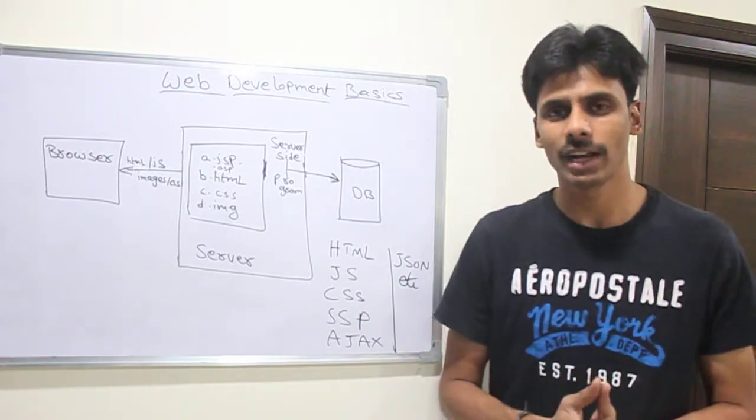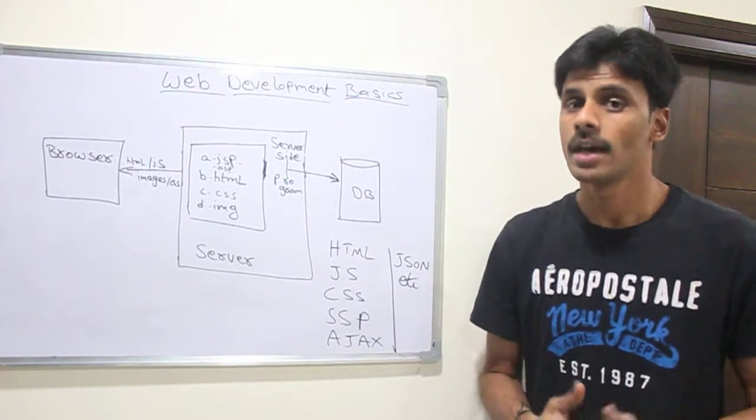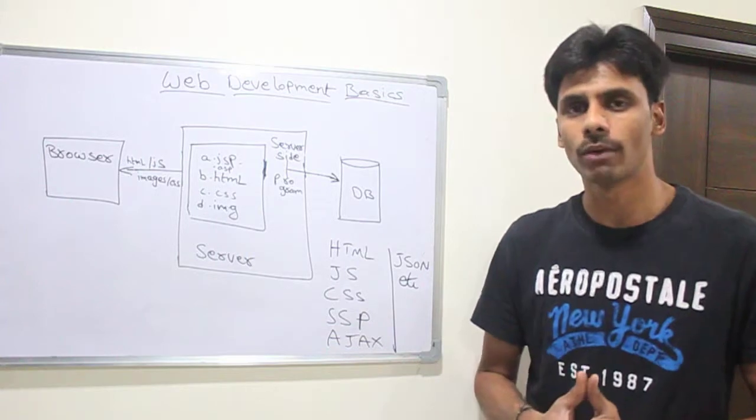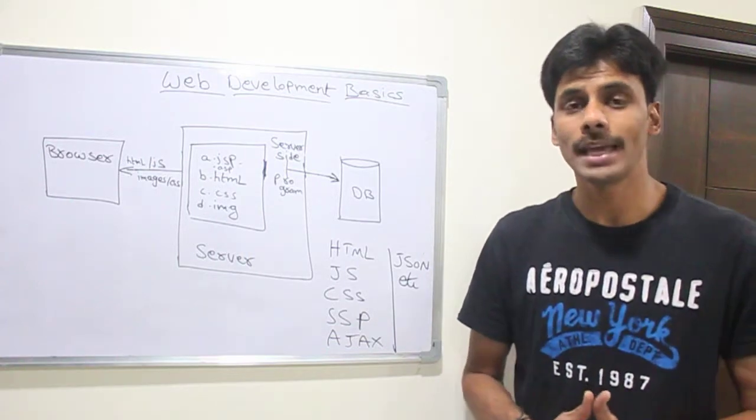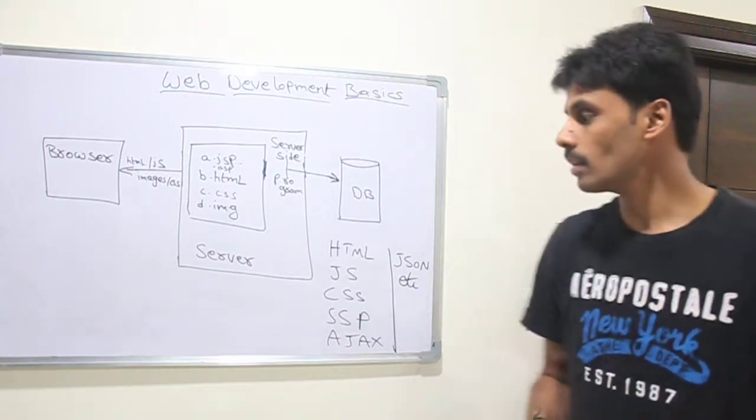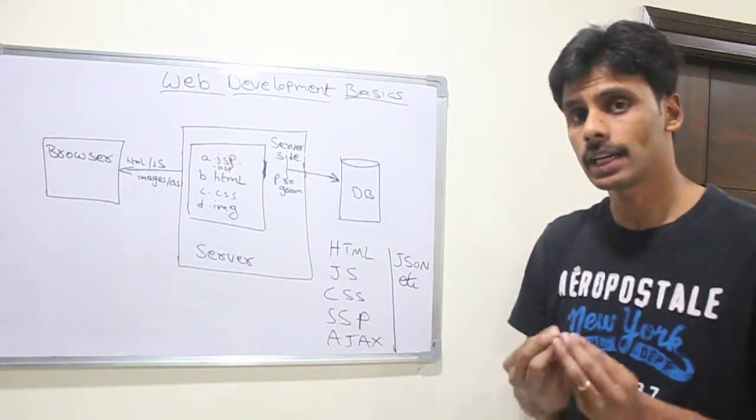In Java, the server-side program could be a servlet, a Spring MVC based UI which is calling into the DAO layer. In .NET, it could be an ASP page, a web service, etc. At the end of it, what goes to the browser is HTML and JavaScript. That is the key that you should remember.